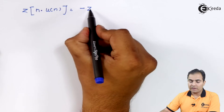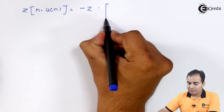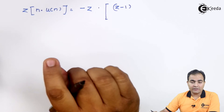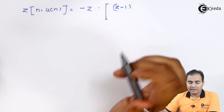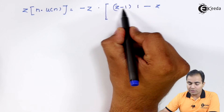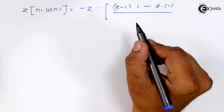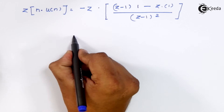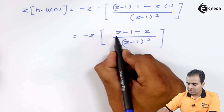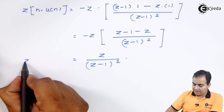So the Z-transform of n·u(n) is −z times the derivative. Here u = z and v = (z−1), so v·d(u) gives (z−1)·1, and u·d(v) gives z·1, all over (z−1)². Opening the bracket: z−z cancels, and −1·(−z) gives z, so the result is z/(z−1)². This is the Z-transform of n·u(n).